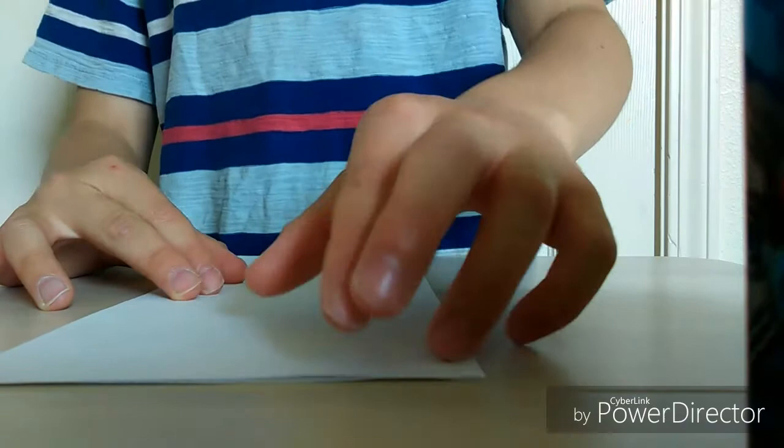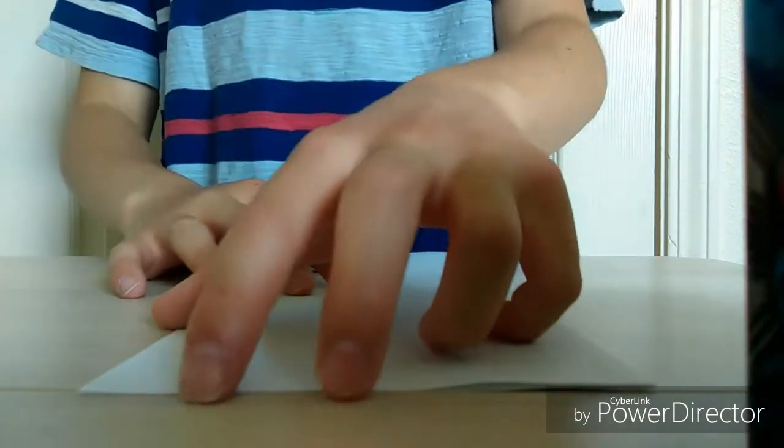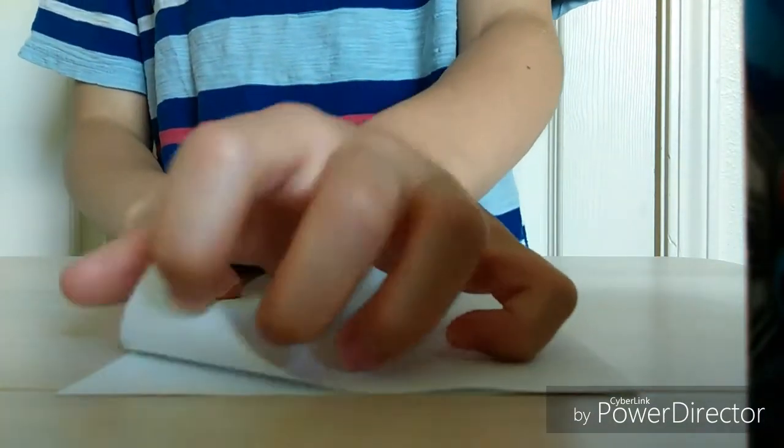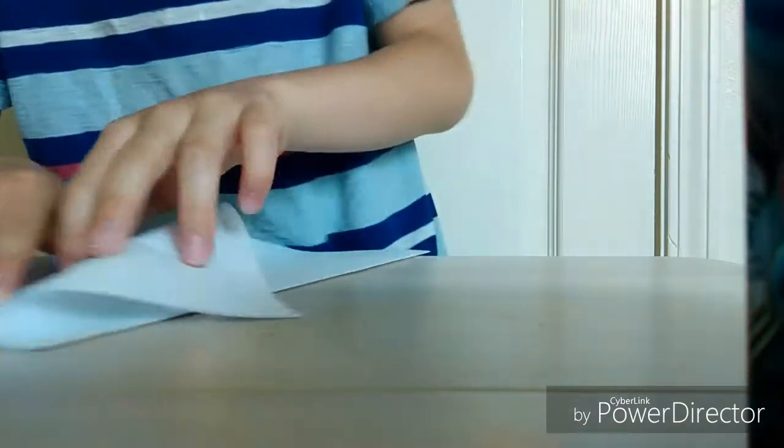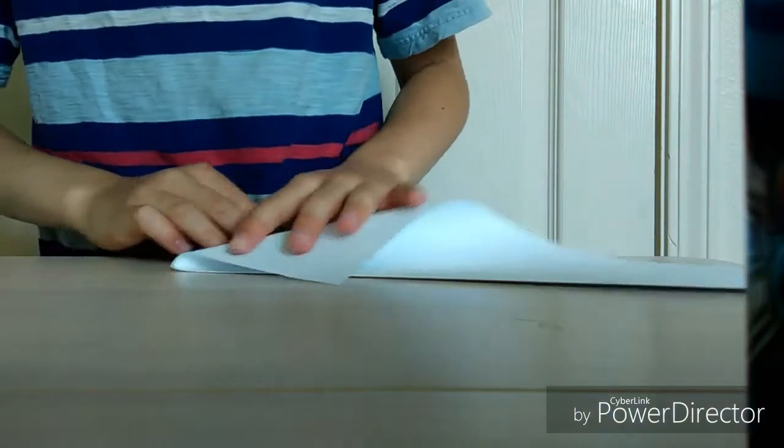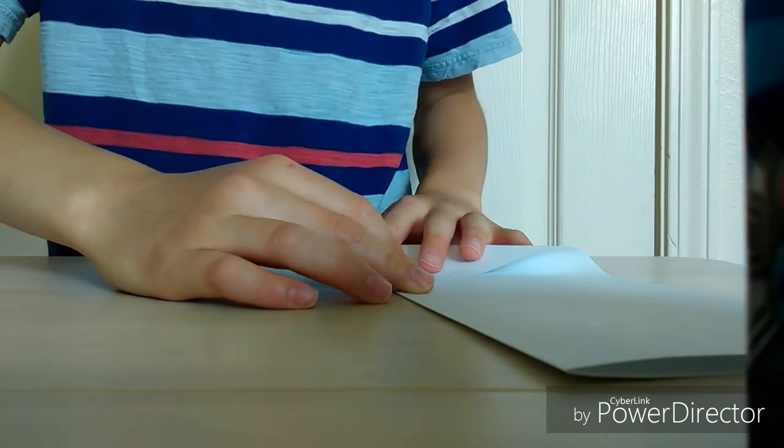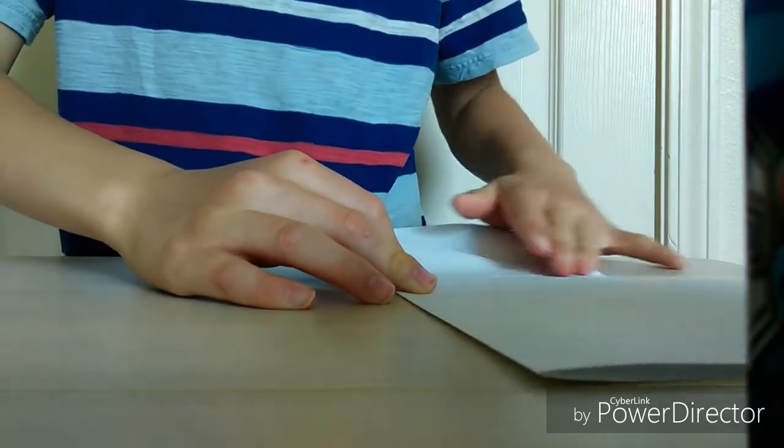After you're done folding it in half, don't open it up but choose one side and fold the corner down so it makes a square. After you're done, it should look like this.